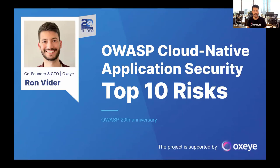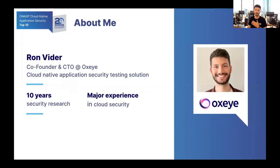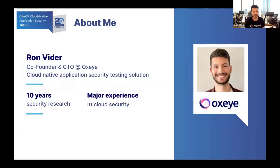We will have a fun half hour and we have a lot to talk about. I will start with a short introduction about myself. My name is Ron Videl. I'm the co-founder and Chief Technology Officer at Oxlite. Oxlite is a cloud native application security testing solution. Our goal is to find custom code vulnerabilities across multiple microservices and the underlying layers before they ever reach production in cloud native applications.